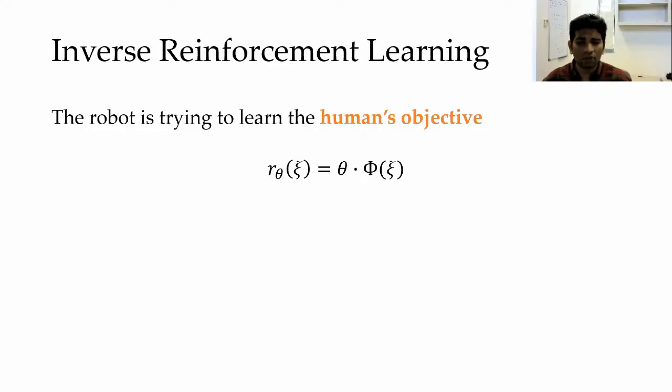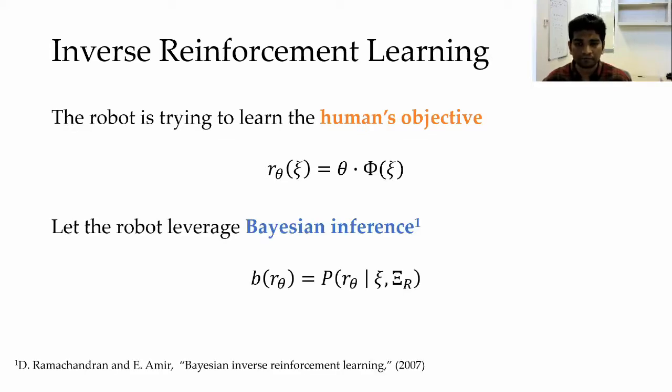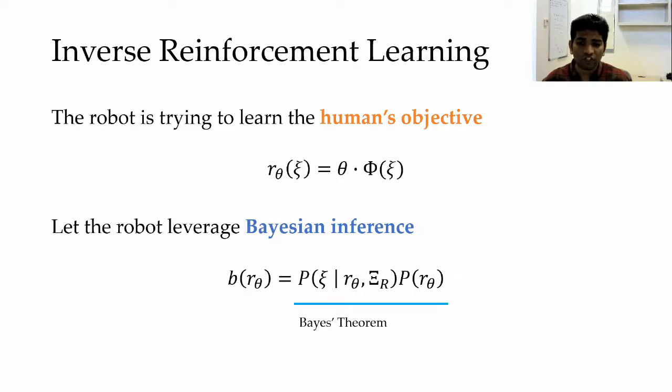With those basics, we can say that the robot wants to learn the human's goal or objective, which is a function of the demonstrations they showed. One way to do this is through Bayesian inference where the robot wants to form a belief over all possible rewards by reasoning over the probability of a particular reward given a particular demonstration and the robot's estimate of all possible demonstrations ΞR. To make this easier, we turn to Bayes' theorem.